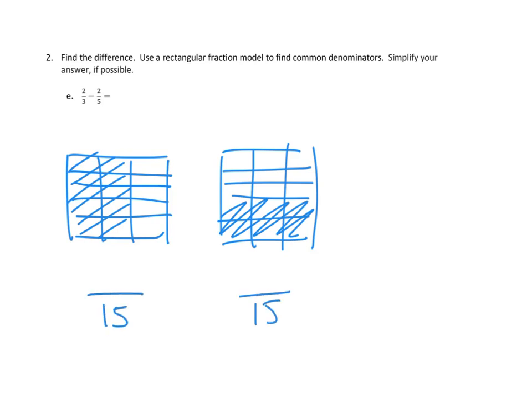You know, we can count those up, or we could skip count. This is 5, 10, 15. Either way, we're going to come up with 15. And how many of those are shaded? Well, let's see. This looks like 5, 10 are shaded over here.